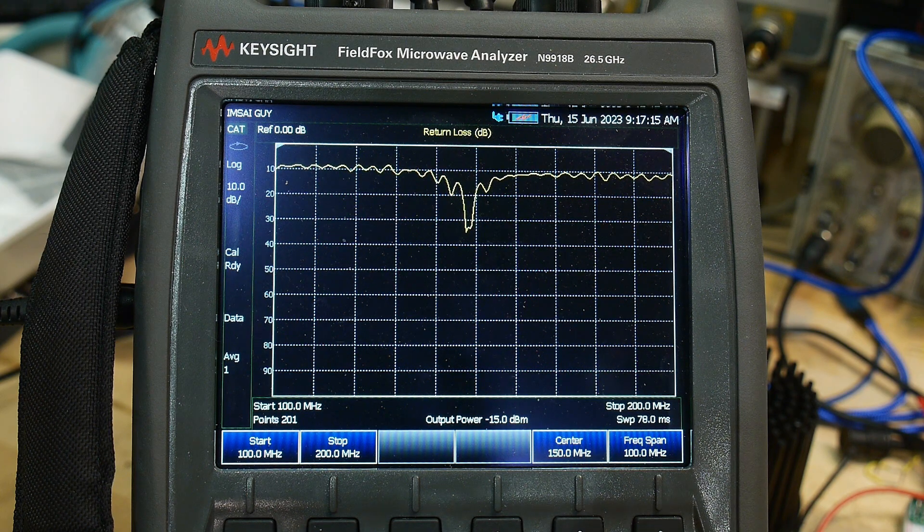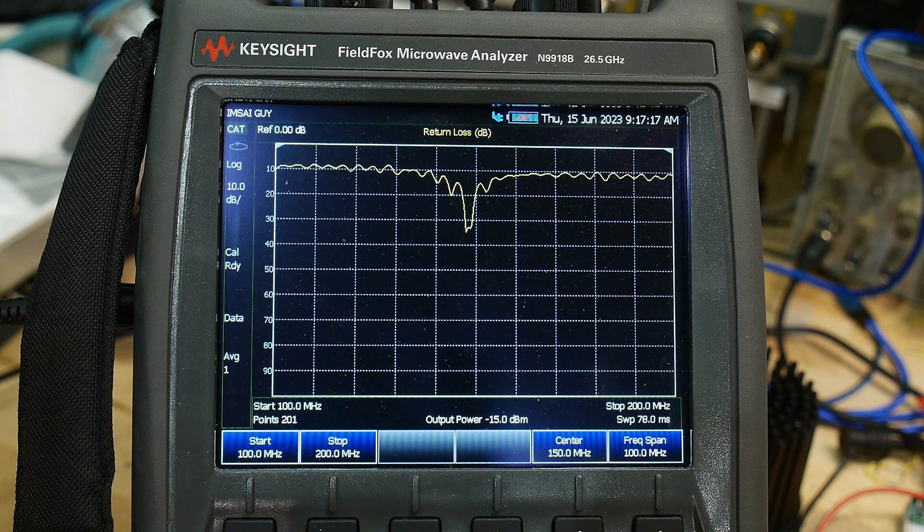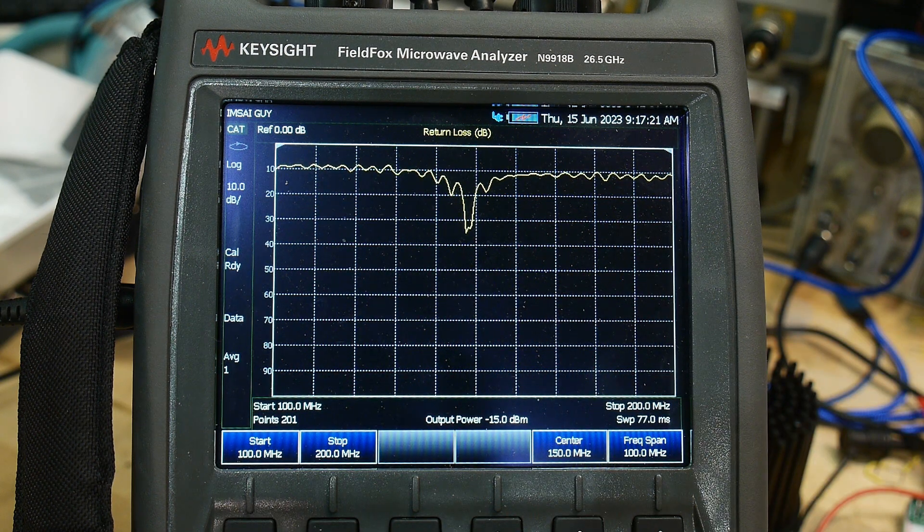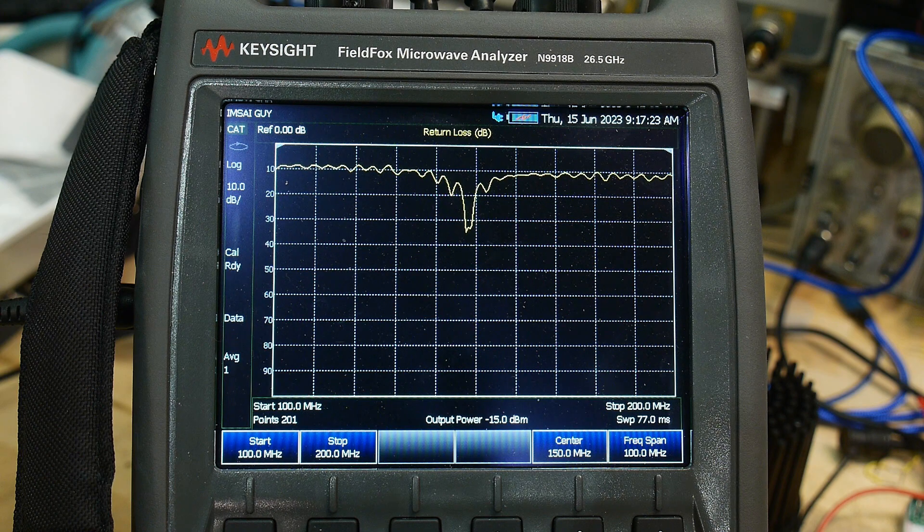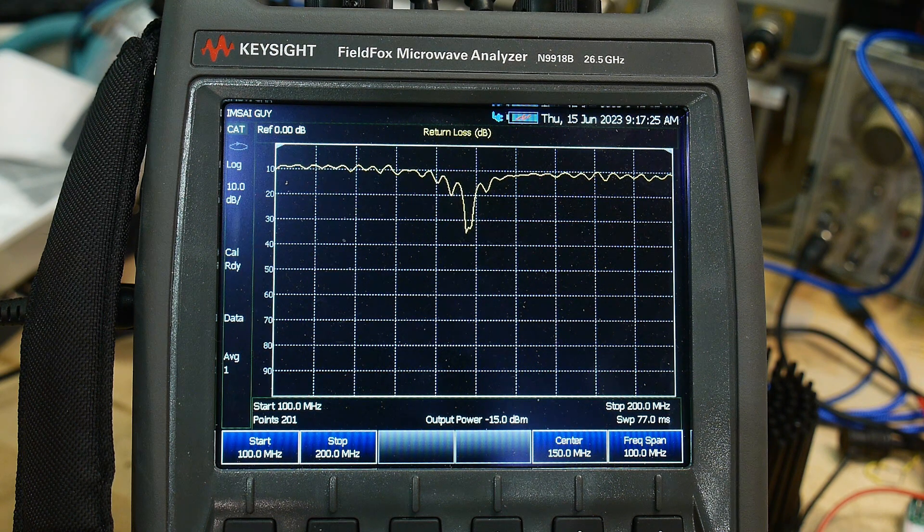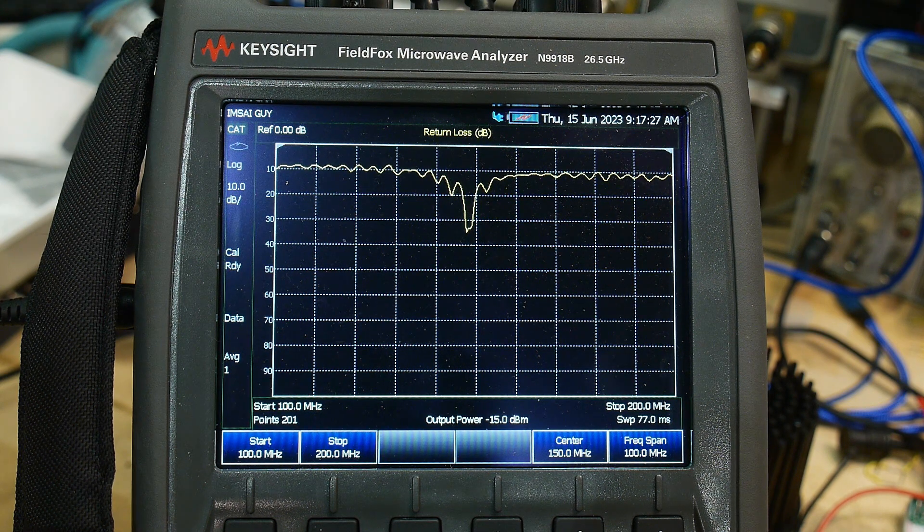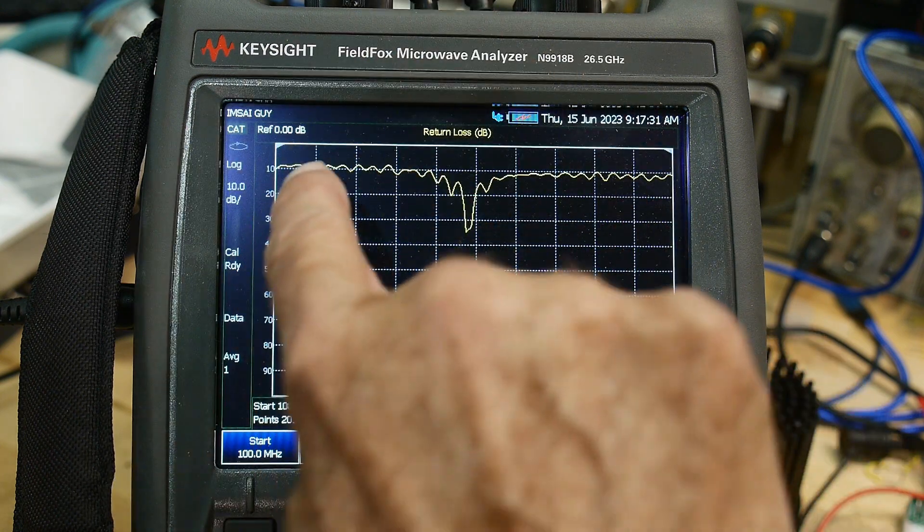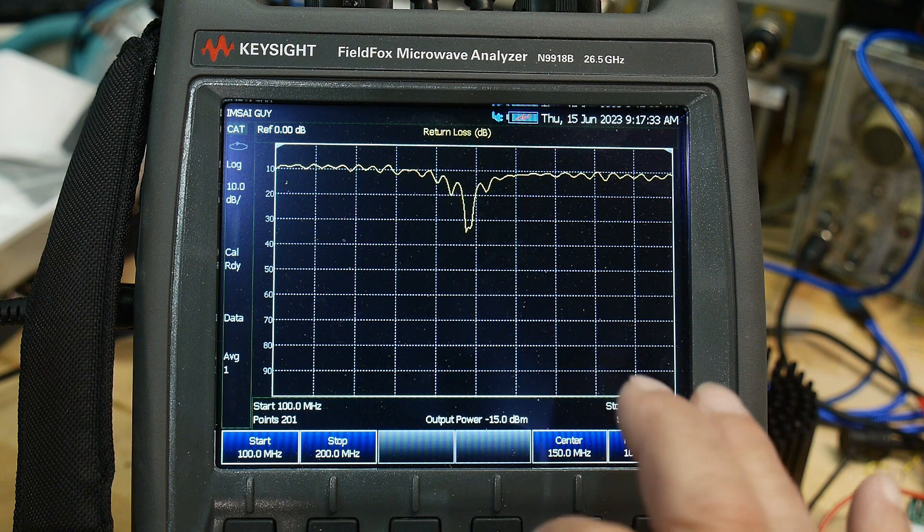So to get here, we do mode network analyzer. We're looking at S11. So this is an S11 measurement. S11 is just how well matched is the thing you're measuring. It's expected to be 50 ohms. It's kind of inverted, but the lower you go, the more 50 ohms you are.